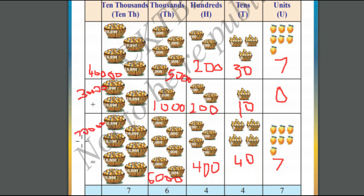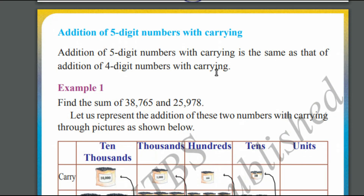When we add all these numbers, we will get 76,447. We are done with addition of 5-digit numbers without carrying.